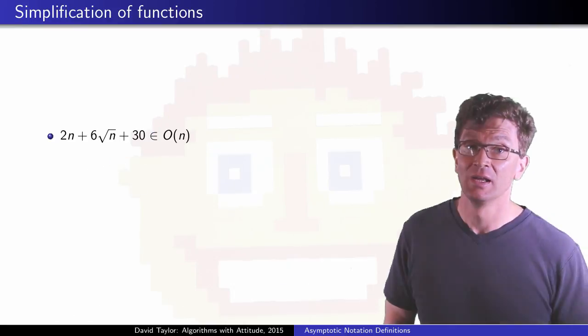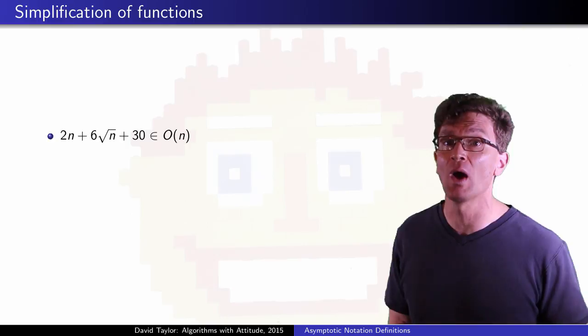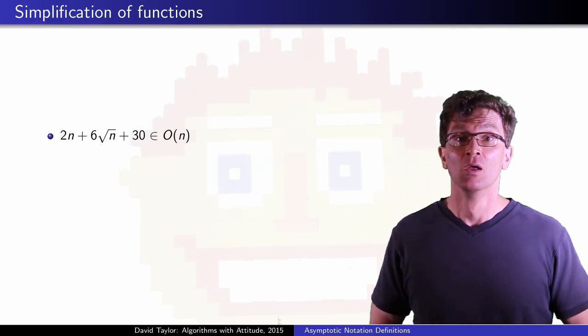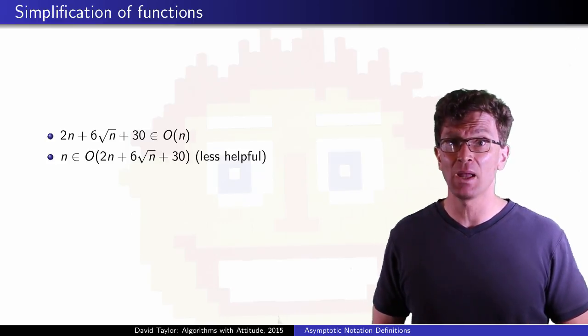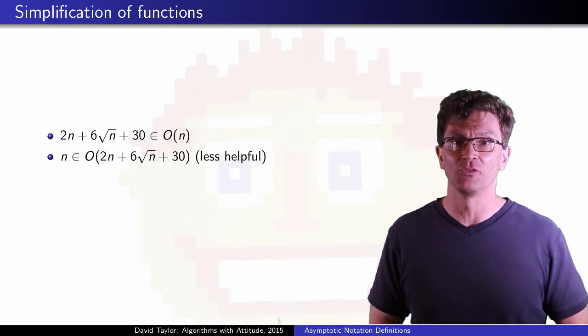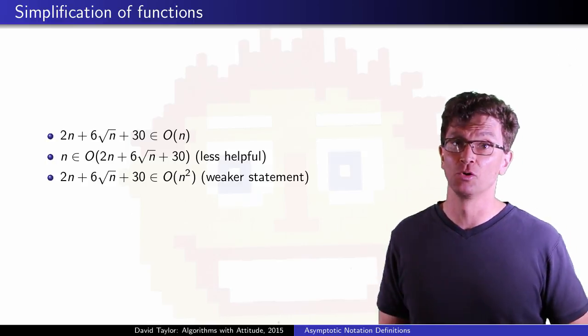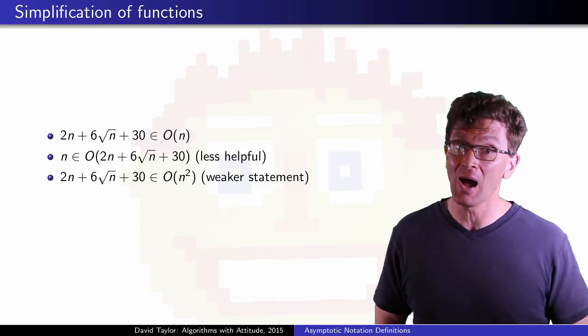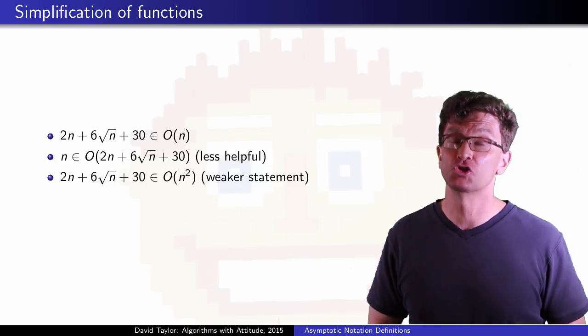So what does that do for us? Here, we can simplify our function, ignore some of the less important parts, and say 2n + 6√n + 30 is in big O of n. We haven't proved it, but we can also say n is in the set big O of 2n + 6√n + 30, but that's not so helpful. Usually we want to simplify things. Again, something else we haven't proved, 2n + 6√n + 30 is in big O of n², but we prefer the first one because smaller upper bounds are stronger statements.